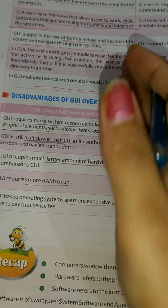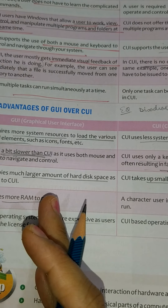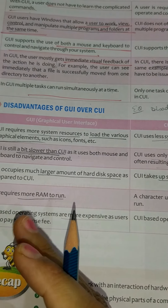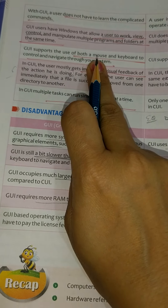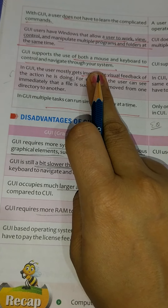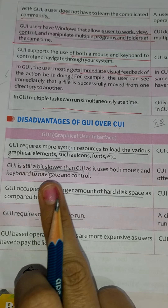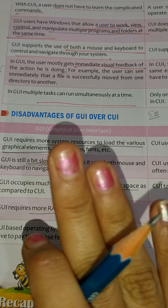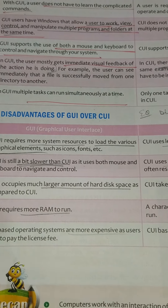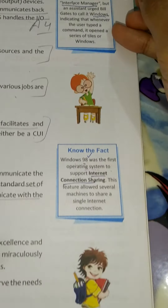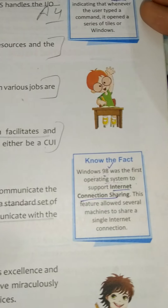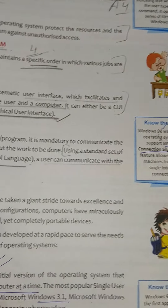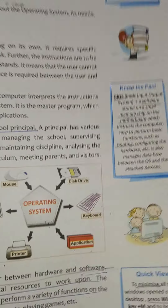Both the things you can write in differences if they ask. If they ask advantages of GUI, write those points. And if they ask disadvantages of GUI over CUI, write these points. Now these right side parts were left on page number 9 and page number 7.